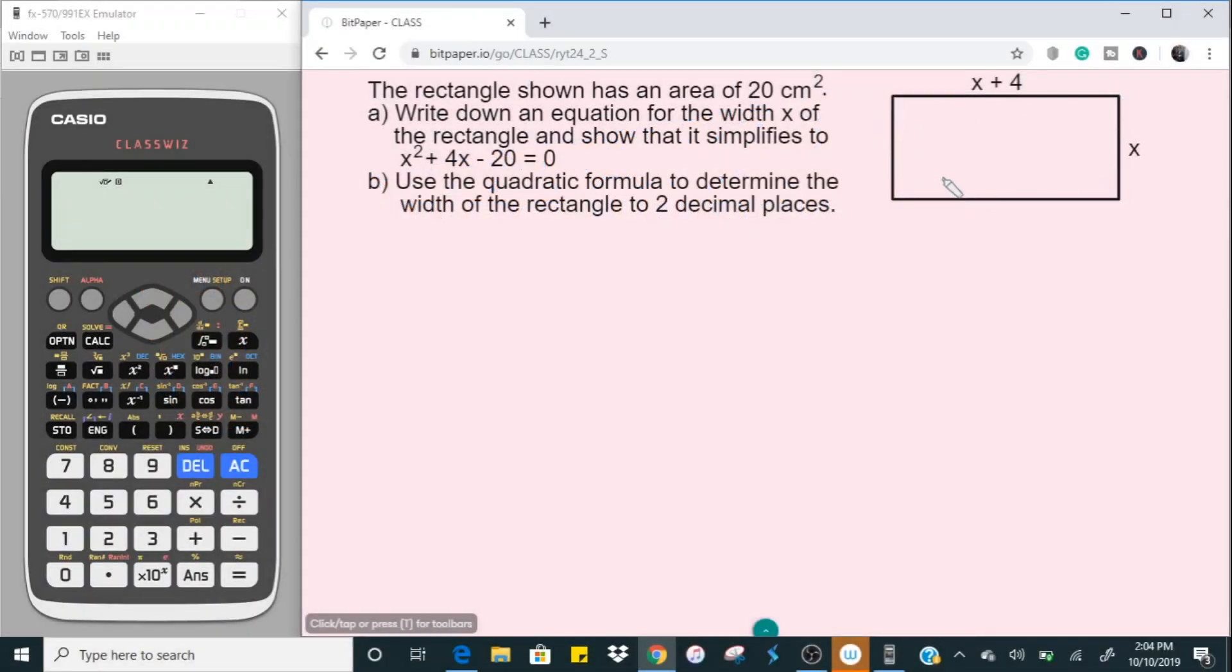Here we have a rectangle with an area of 20 square centimeters and having dimension for the length x plus 4 and the width x.